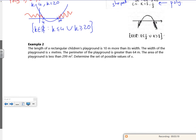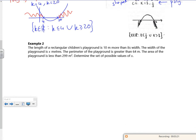Right, example 2. Oh my, you're on 3 minutes. Awesome, isn't it? So the length of a rectangular children's playground is 10 meters more than its width. And we'll have the width as x.